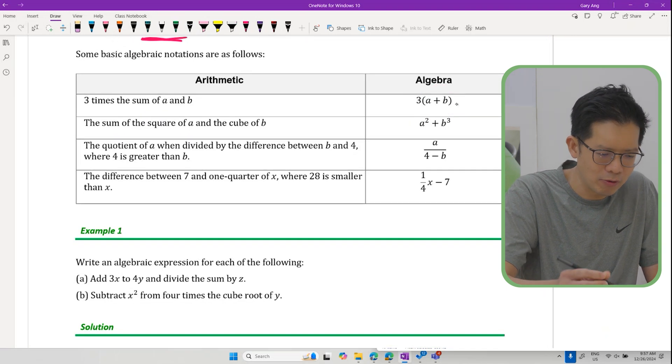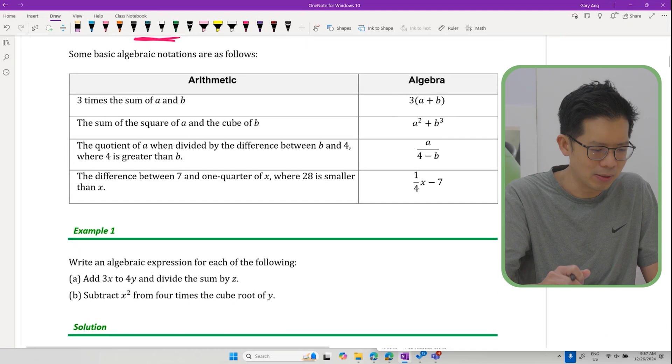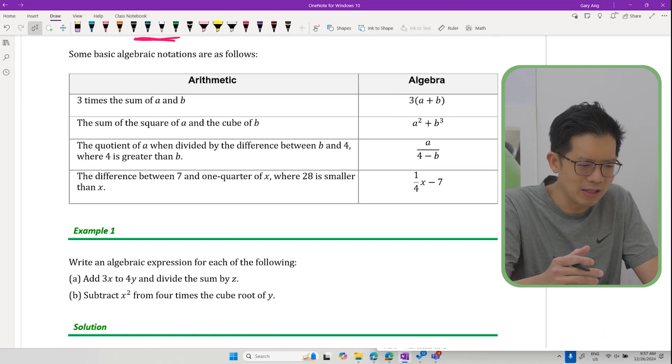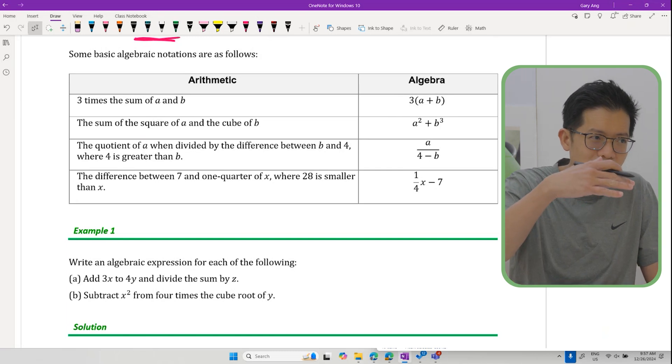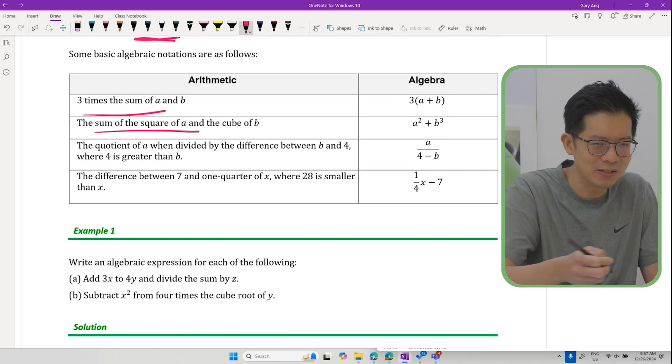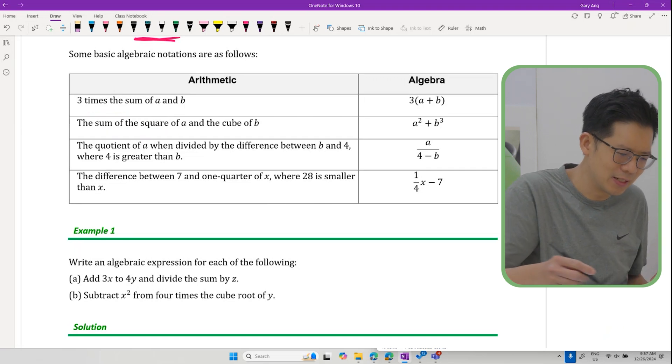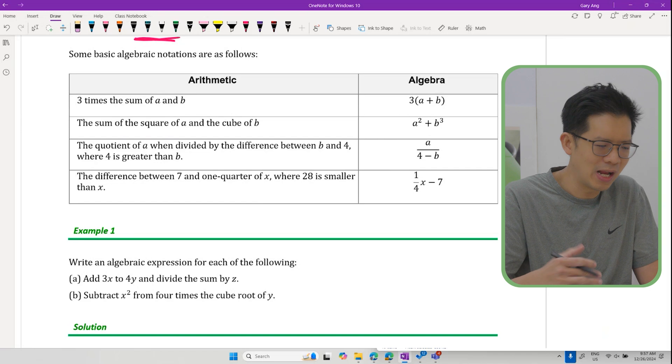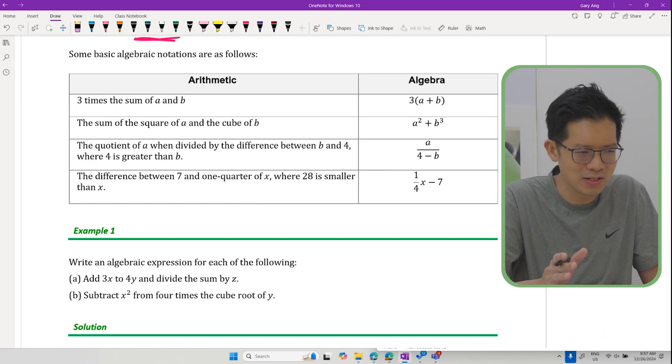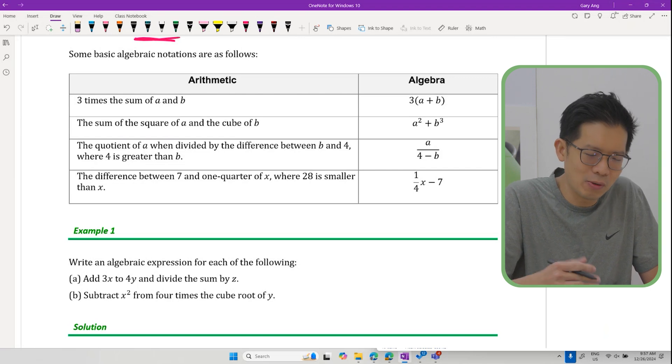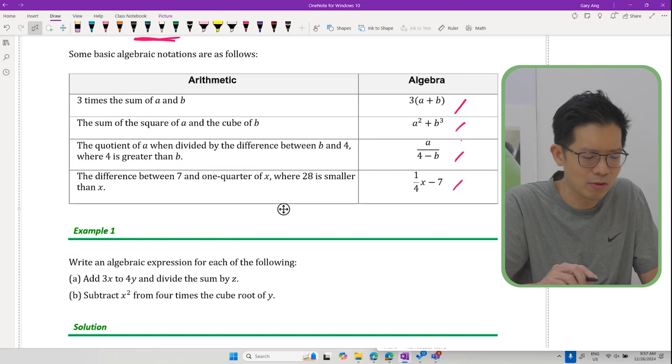Before algebra was so widely used in mathematics, mathematical problems and their solutions were very long because they used English terms and phrases like this to describe what they were doing. It was very cumbersome and inefficient to communicate to another person. That was a long time ago. In this day and age we have algebra and that is one of the reasons why it is so important in mathematics.